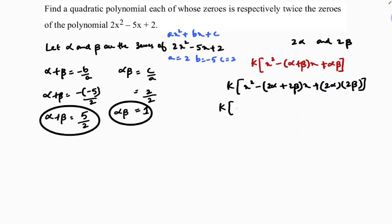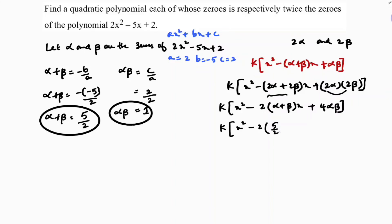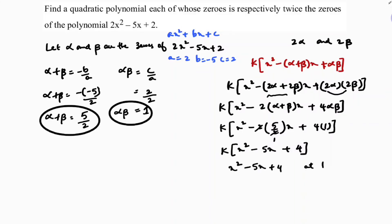In the middle term, we take 2 common to get 2(alpha plus beta), and the constant term becomes 4 times alpha beta. Now substituting the values: alpha plus beta is 5 by 2, so 2 times 5 by 2 gives 5, and the 2s cancel. 4 times alpha beta is 4 times 1 equals 4. So we get k times x squared minus 5x plus 4, giving the polynomial x squared minus 5x plus 4 at k equals 1.